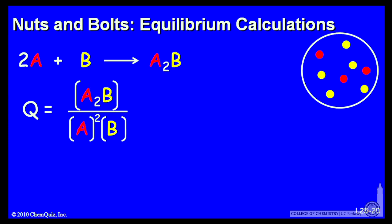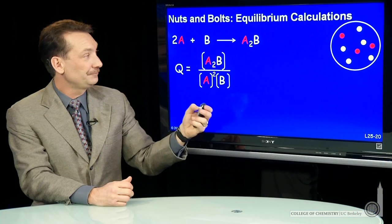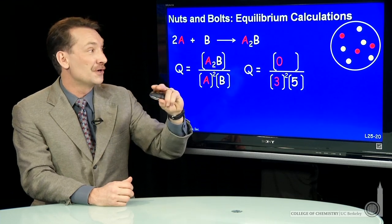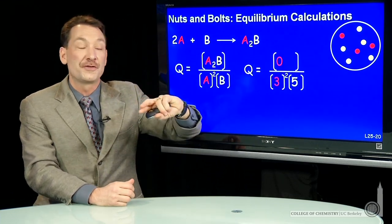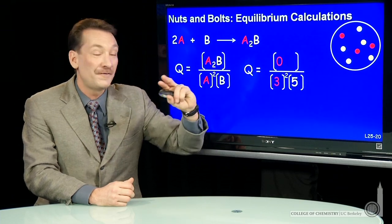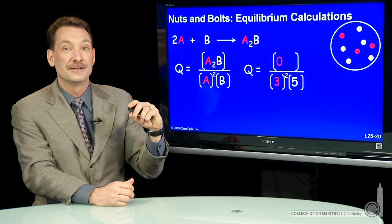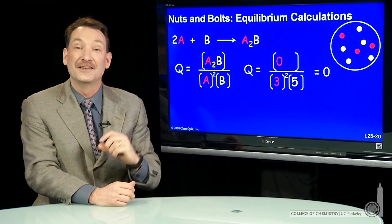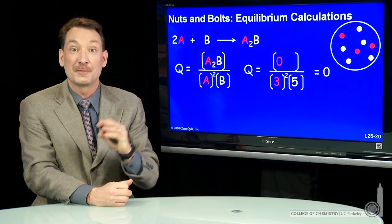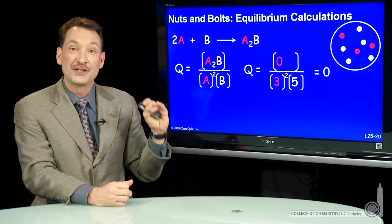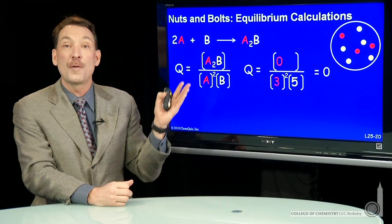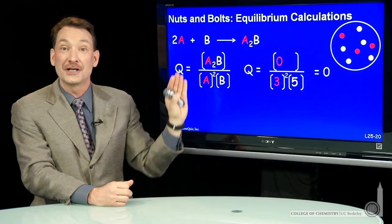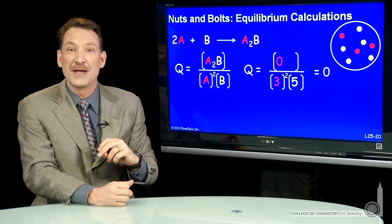If I look at that in terms of the initial conditions, there is no A2B yet, so that concentration is 0. There are 3 units, or a partial pressure of 3 for A, and a partial pressure of 5 for B. So Q is 0. That's less than the equilibrium constant of 0.25. When Q is less than K, we need to form more products. We need to make the numerator bigger so Q approaches the larger K value. So we anticipate we're going to make some products here.